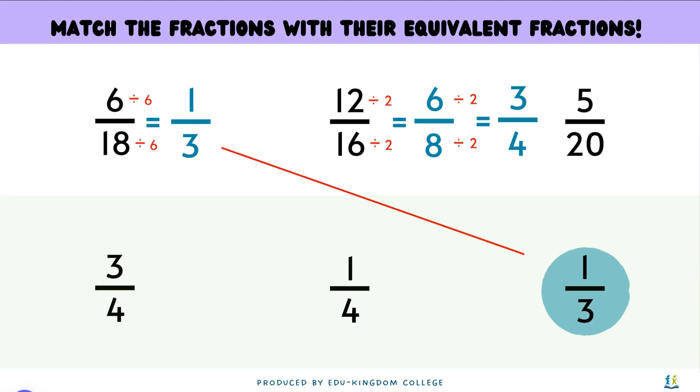Instead of doing divided by 2 twice, we can see that 12 and 16's HCF is 4. And 12 divided by 4 gives 3 and 16 divided by 4 gives 4. This would just give the same answer 3 quarters but faster.